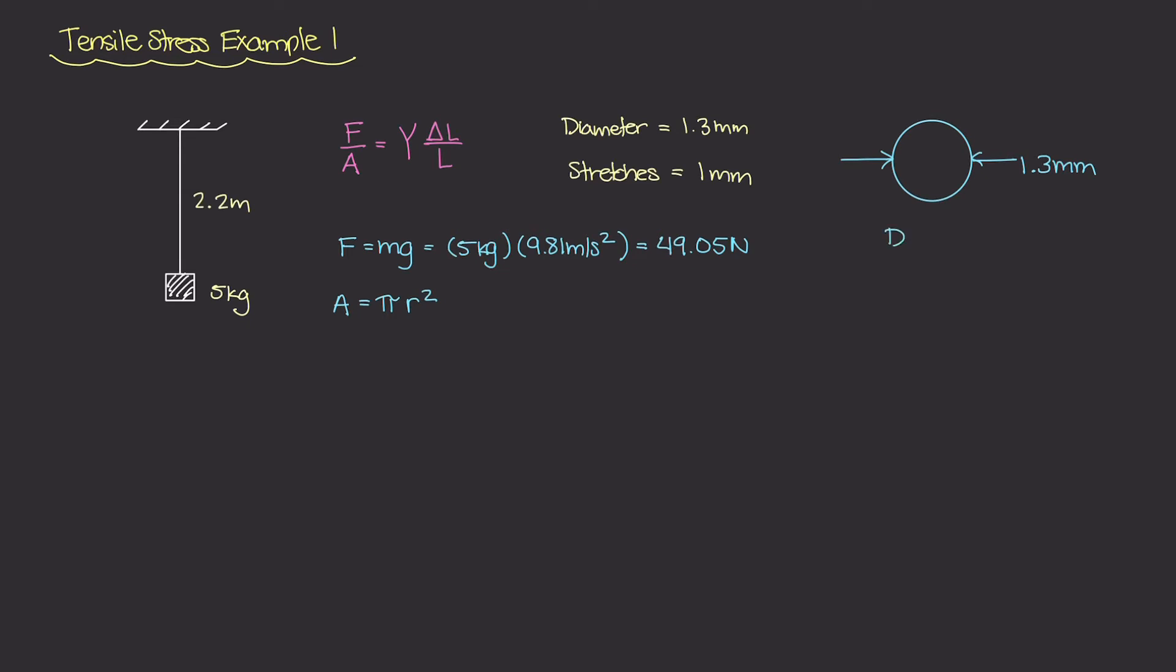So in order to figure out the area we need π times r squared. Well if the diameter is 1.3 millimeters, then the radius is going to be half of that, which is 0.65 millimeters. And to keep this in consistent units, I'm going to divide by 1,000 and I'll get 0.00065 meters.